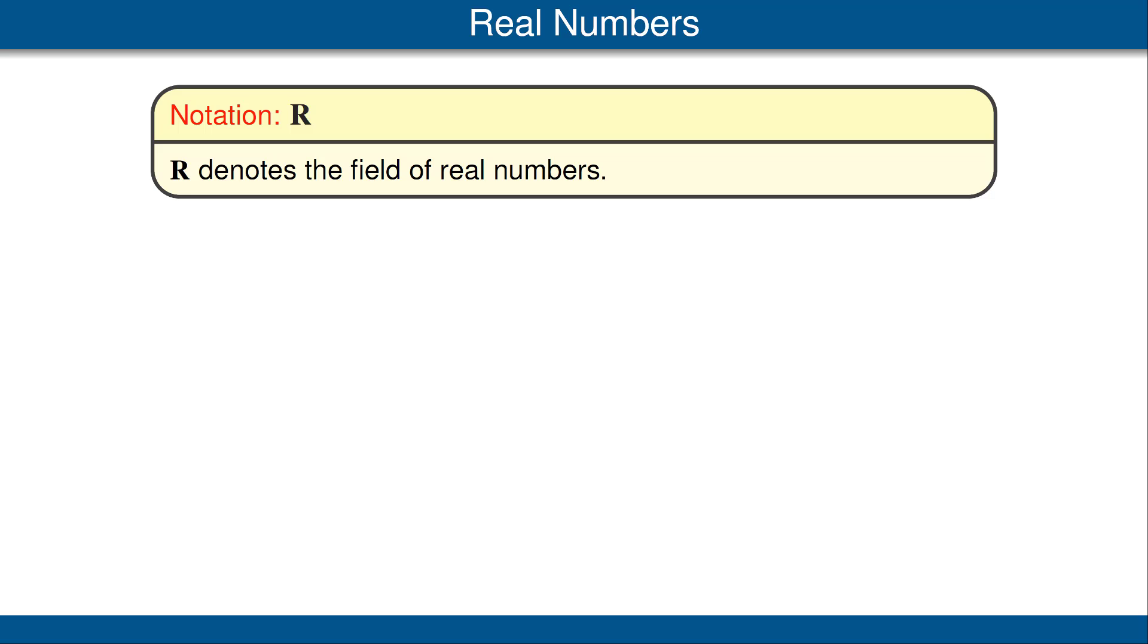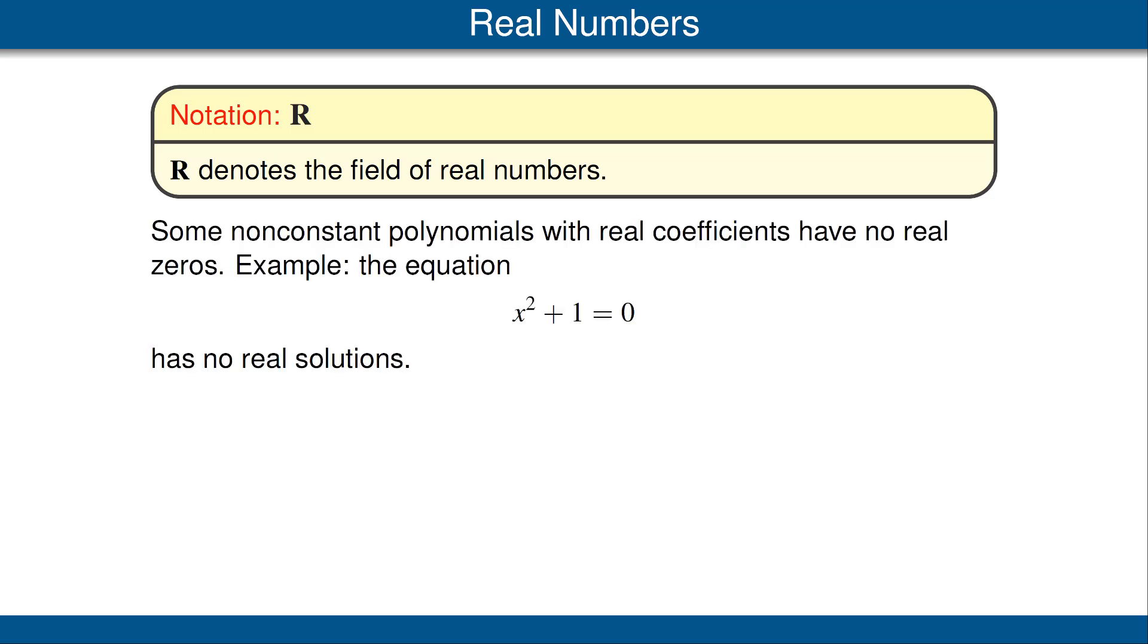Even if we were interested in doing linear algebra just with real numbers, we would be forced to consider complex numbers. The reason for this is that the real numbers are not rich enough to have zeros for non-constant polynomials. For example, the equation x squared plus 1 equals 0 has no real solutions.